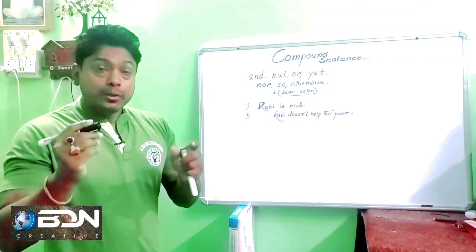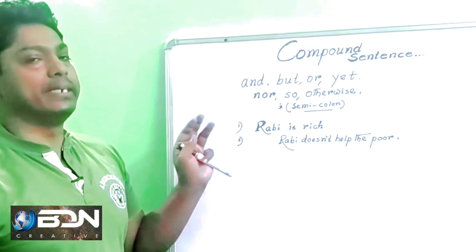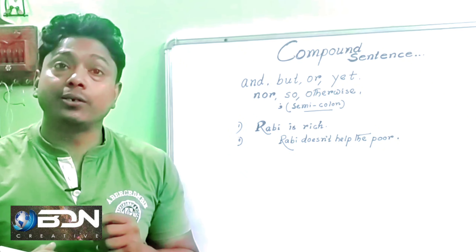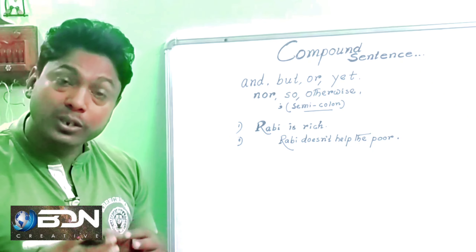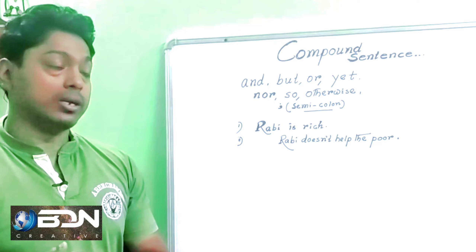Here is an example. Number one: Ruby is rich. Ruby is rich — this is our first independent clause with its own subject and information.